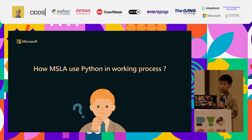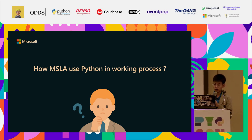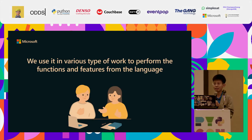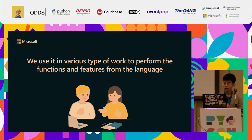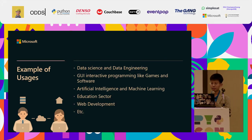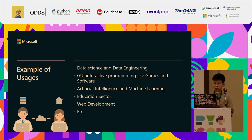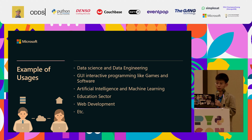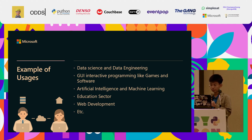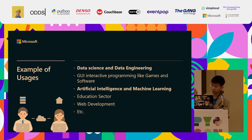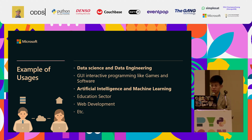So how much do Student Ambassadors use Python in their working process? As I mentioned, we use Python for various types of work, including data science, data engineering, interactive programming like games or software, artificial intelligence, machine learning, education, and also web development. The highlights are data science and artificial intelligence for machine learning.